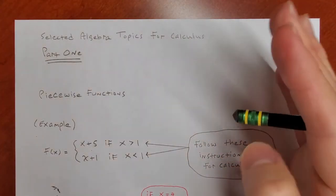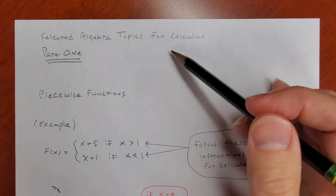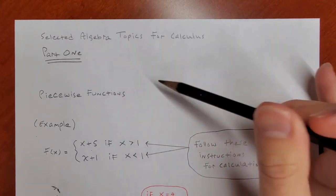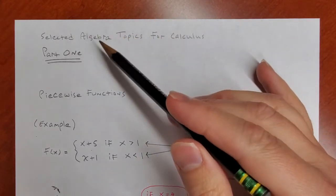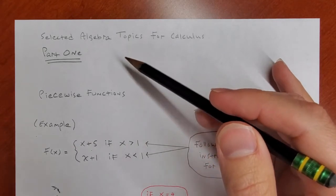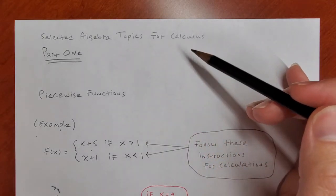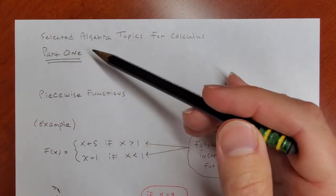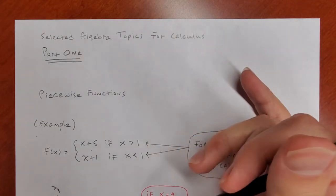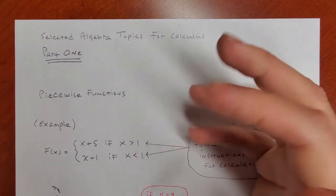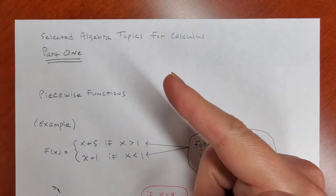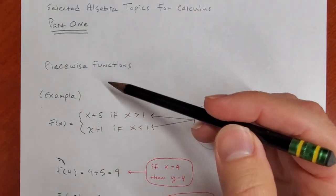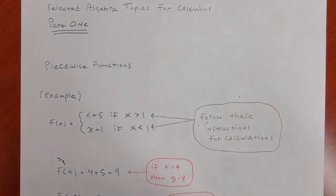Pretty soon we'll be doing calculus in class, but the best place to start is to talk about a few things from algebra that you need to have a really firm grasp of in order to do calculus. I have my first lesson titled 'Selected Algebra Topics for Calculus' and I'm going to run through all the aspects of that in four videos. This is going to be the first one. First thing: piecewise functions.